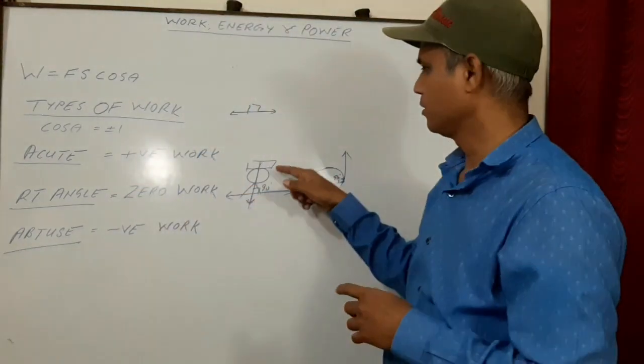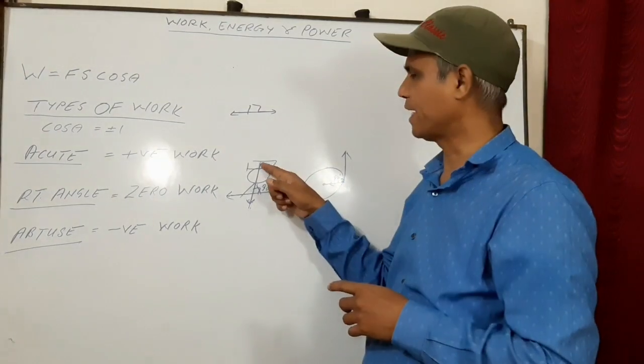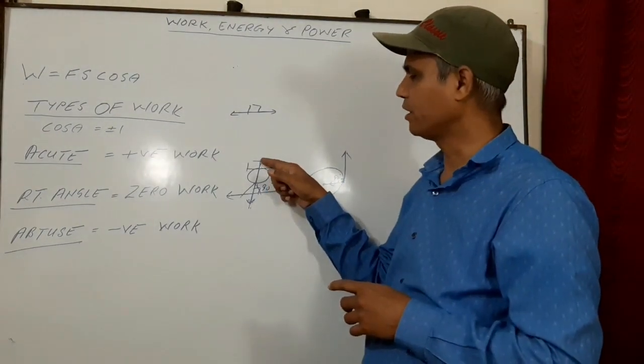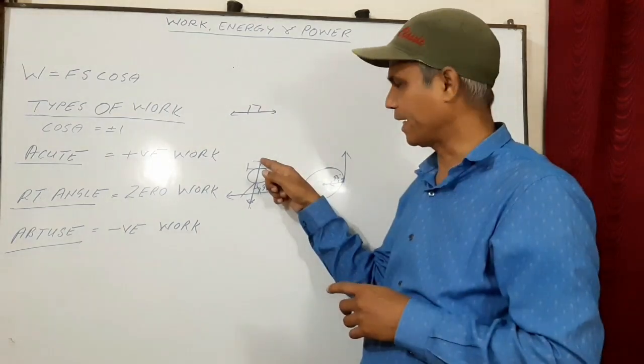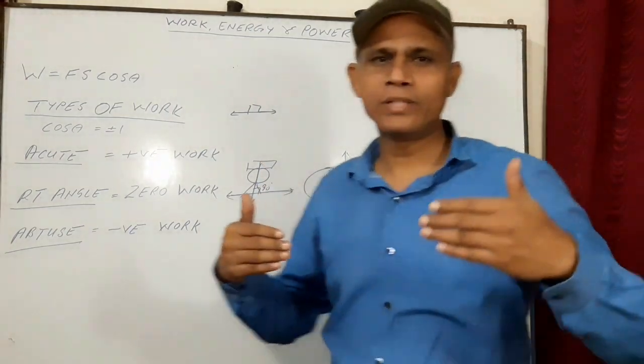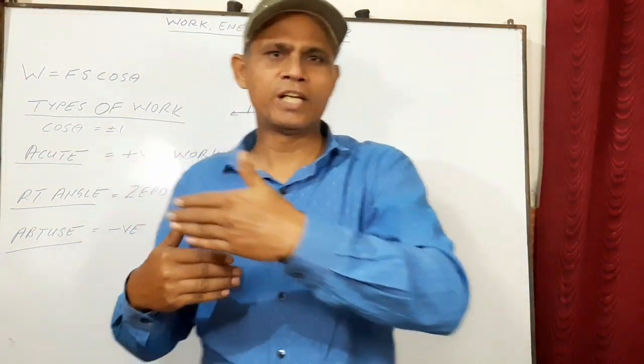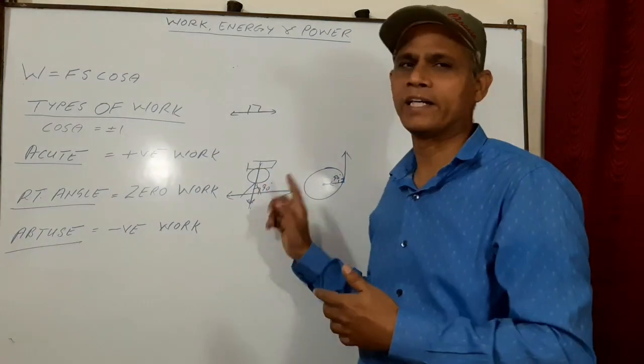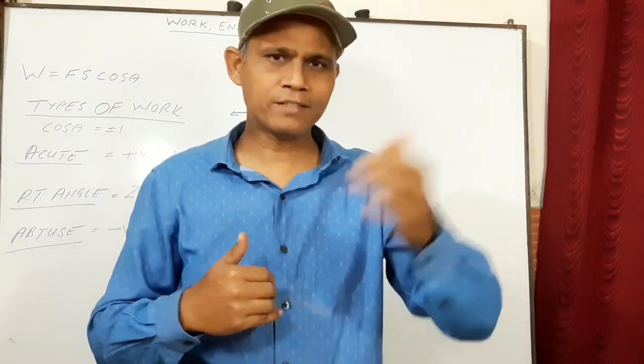See, suppose this is a coolie who is having a load on his head. The weight is acting vertically downward and the coolie is moving in the horizontal direction. Hence the angle is 90 degrees, therefore work done is 0.